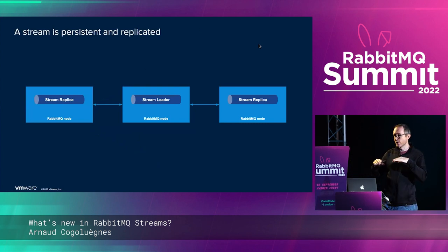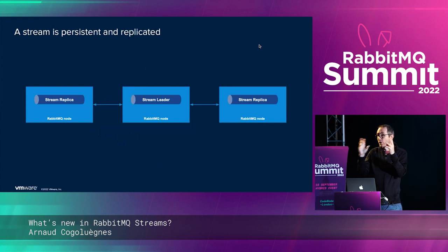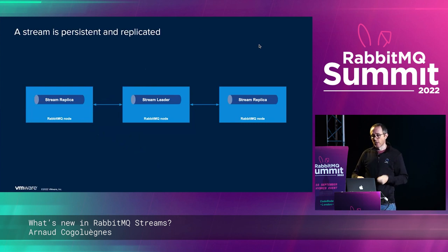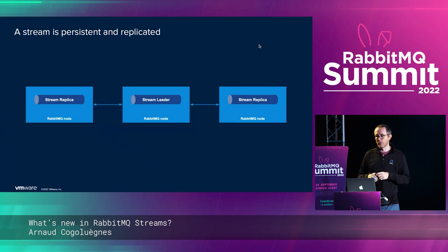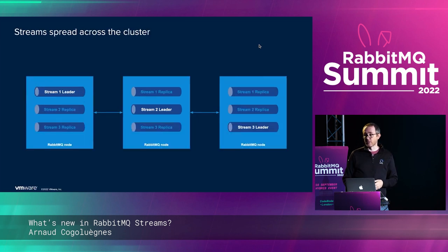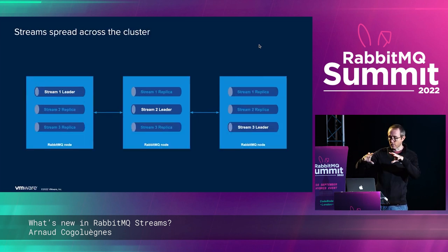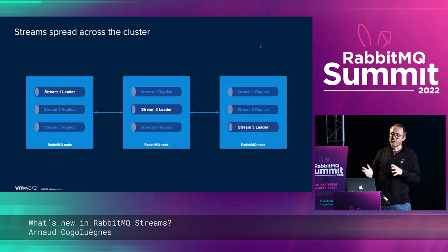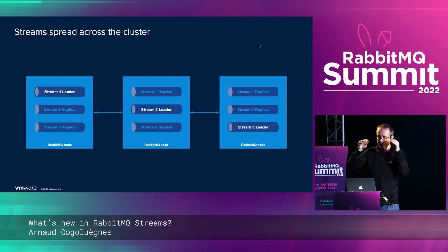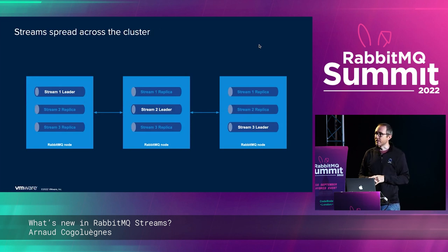A stream is always persistent and replicated. We have a small cluster for each stream with a leader accepting all write operations and replicas that follow to replicate the data. You don't have a choice — unlike in-memory options, streams are more opinionated. When you have a bunch of streams, the leaders get scattered across the cluster. In this case you have three streams and their leaders are on their respective nodes.